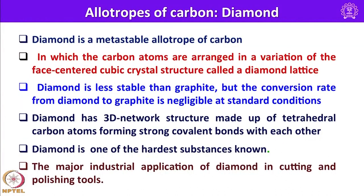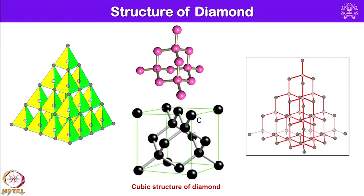Let us look into another allotrope of carbon — diamond. Diamond is a metastable allotrope of carbon in which the carbon atoms are arranged in a variation of the face-centered cubic crystal structure called a diamond lattice. Every carbon atom is tetrahedral and coordinated to another carbon atom, and this network is three-dimensional, which leads to the formation of diamond. Diamond is one of the hardest substances known, and its major industrial application is in cutting and polishing tools. The cubic structure of diamond can be seen in this diagram.